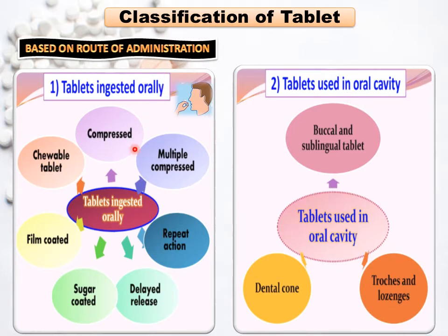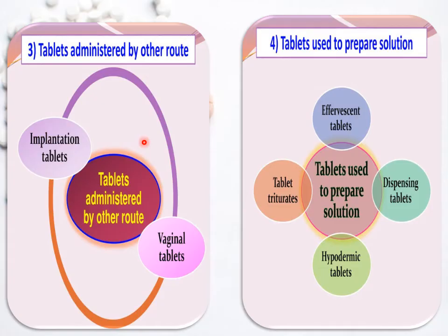Tablets used in the oral cavity are divided into: buccal and sublingual tablets, troches and lozenges, and dental cone. Next is tablets administered by other routes, which are divided into two: implantation tablet and vaginal tablet.